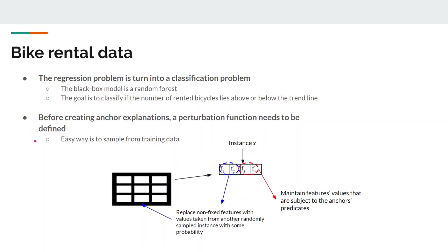But before creating an anchor explanation, a perturbation function needs to be defined. An easy way to do so is to use an intuitive default perturbation space for tabular explanation cases, which can be built by sampling from the training data. For example, if we have this instance x that we want to be explained. When we perturb the instance, the feature values that are subject to an anchor predicates are maintained, while the non-fixed features are replaced with values taken from another randomly sampled instances with a specified probability. In this way, they resemble neighbors.